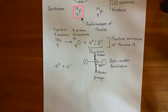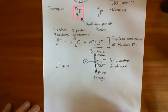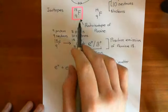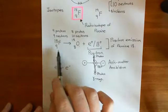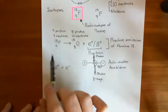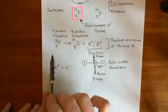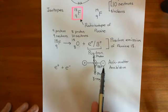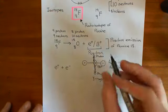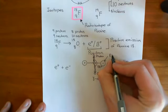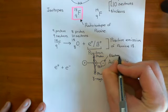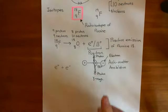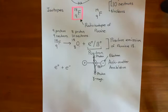Welcome back to this next video on positron emission tomography. We have seen how we can have this radioactive isotope of fluorine which undergoes positron emission decay. When it radioactively decays, it emits a positron. When this positron hits its antimatter particle, the electron, they annihilate each other and you get two photons being emitted at exactly opposite directions.